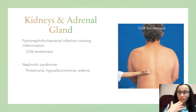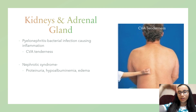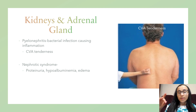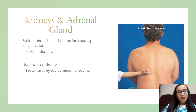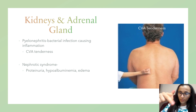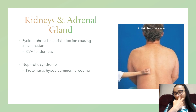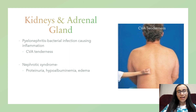Pyelonephritis occurs when a UTI is not treated — bacteria travel up the ureters to the kidney, causing a severe bacterial infection that causes the kidney to swell. Nonspecific symptoms include chills, fever, and vomiting. The main symptom is flank pain, since the kidneys are on either side. A specific symptom is CVA tenderness — costovertebral angle tenderness. To test it, place your fist by the flank over the kidneys and thump; if the patient moves away or has pain, it indicates pyelonephritis. Treatment is fluids, IV antibiotics, and blood cultures.